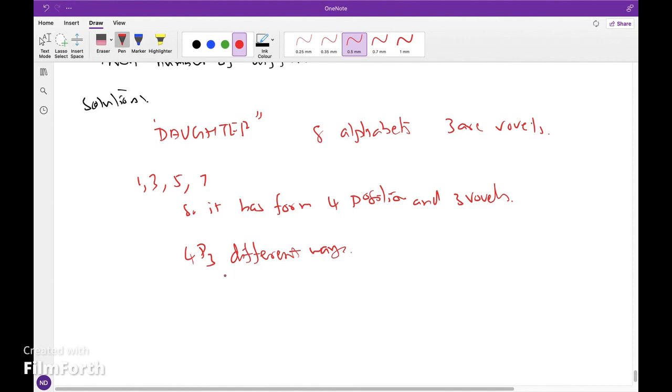Now five positions are left, and for that there are five alphabets. Such arrangement is done by 5 factorial.